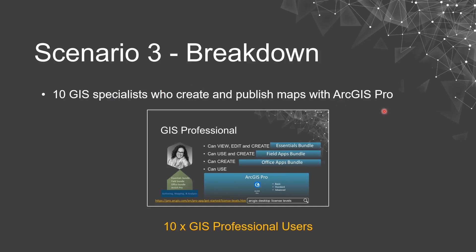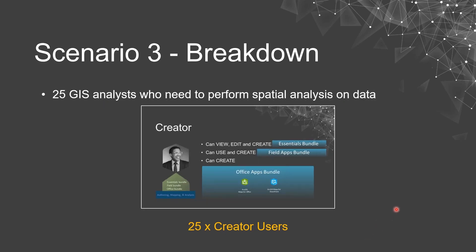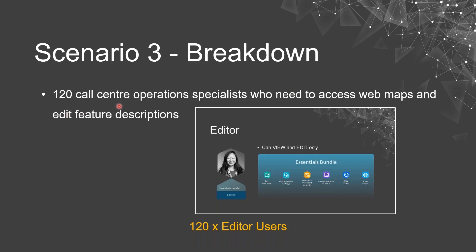Ten GIS specialists need to create and publish web maps with Pro, so we'll grant them 10 GIS Pro user types. Our 25 GIS analysts need to perform spatial analysis — the creator user type is geared towards authoring, mapping, and analysis work — so we'll grant 25 creator user types. Our call center operations specialists need access to web maps and the ability to edit features. If they only needed view access we could grant viewer types, but since they need to edit features, we'll elevate them to editor user type — adding 120 editor users.